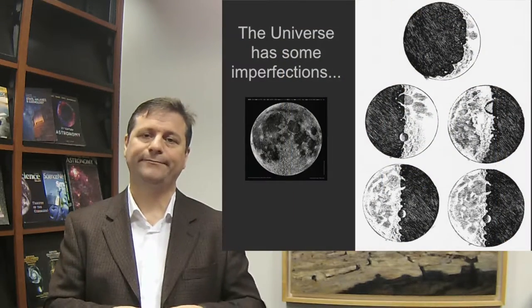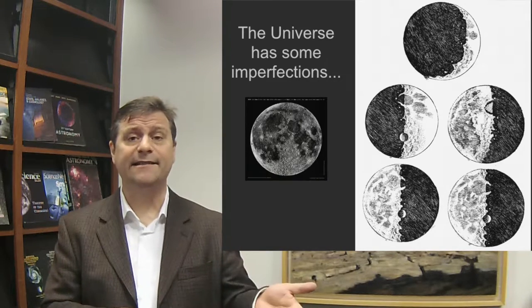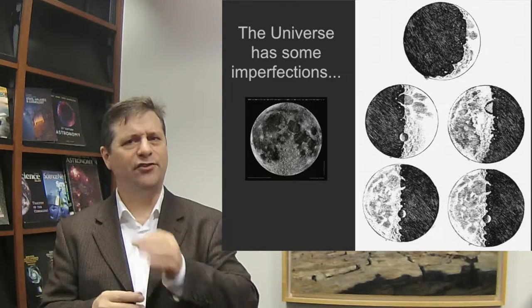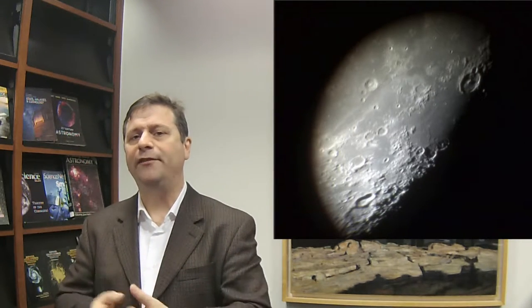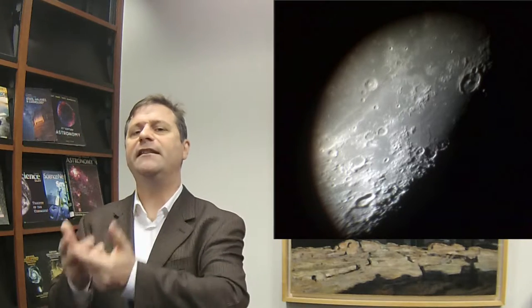He still had the telescope and started looking at the sky. In 1609 he utilized his telescope to observe things. The first thing he did was look at the moon. He saw the moon had valleys and craters and mountains, and it wasn't perfect. Perfection is an important element because in Copernican and Aristotelian thinking, the heavens and all things of the heavens were perfect by their very nature. The moon has imperfections. This is a problem, a philosophical argument.